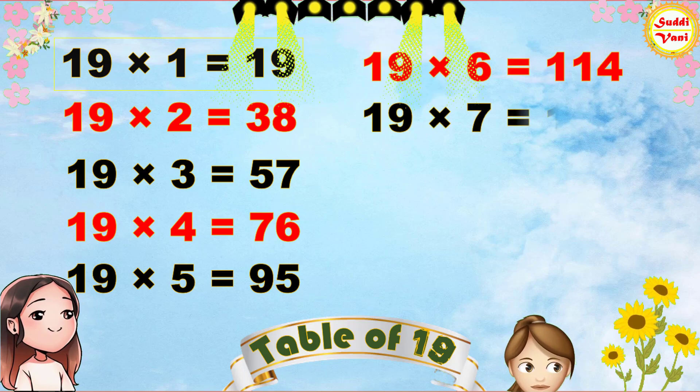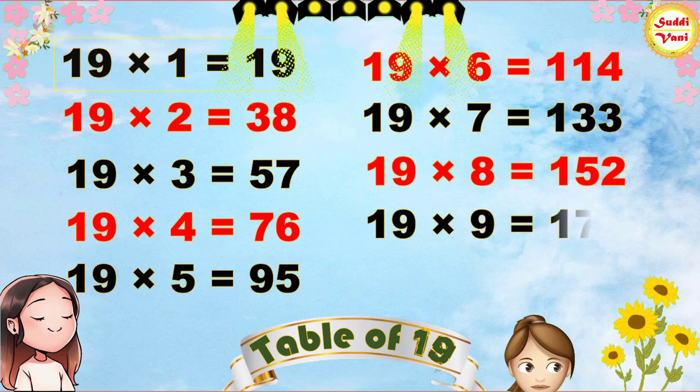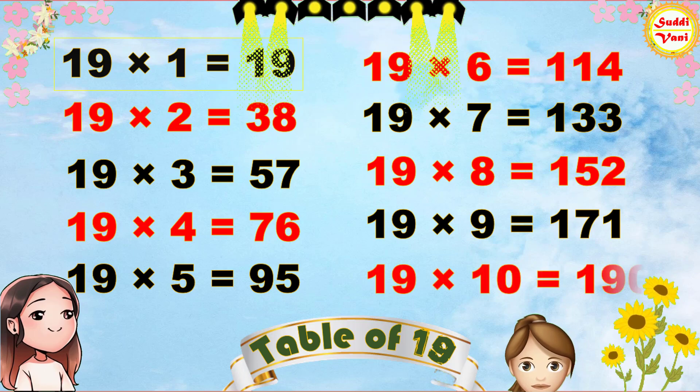19 × 7 = 133, 19 × 8 = 152, 19 × 9 = 171, 19 × 10 = 190.